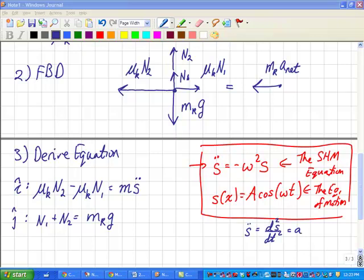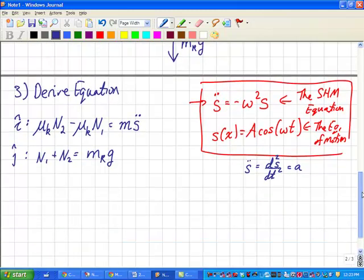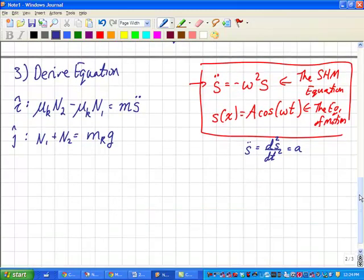Now we do have to be a little bit careful of our signs here. If you look at the i-hat equation, notice that I define to the left as positive, and to the right as negative. Okay, so we've got these two equations. We're trying to get the simple harmonic equation out of them.